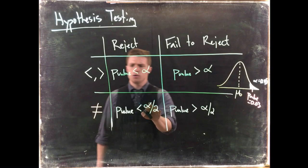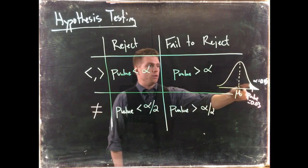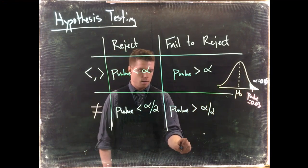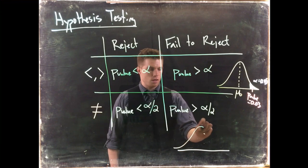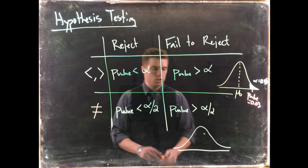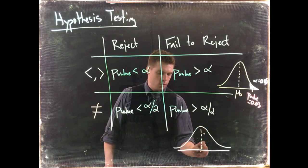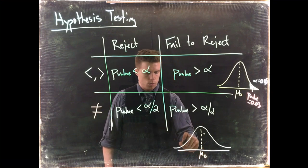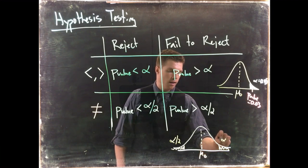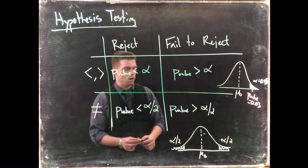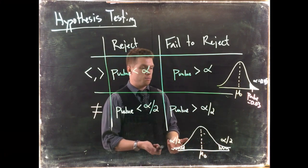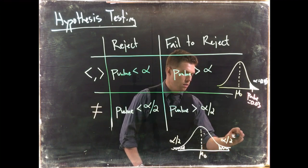Here's why we do this alpha divided by two. Remember we threw all of our error up on one tail when we did greater than or less than. But for two tail, when we do this, we're saying we really don't know if it's greater than or less than—both are problematic—so we'll say not equals to. We throw alpha divided by two to one end and alpha divided by two on the other end.